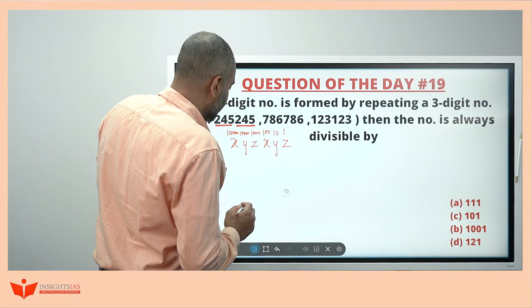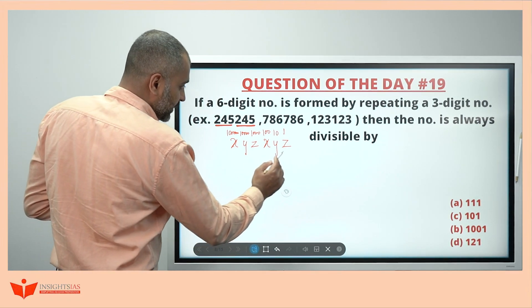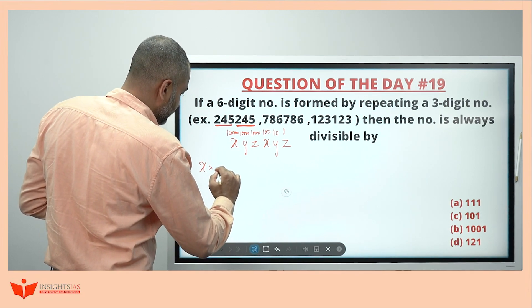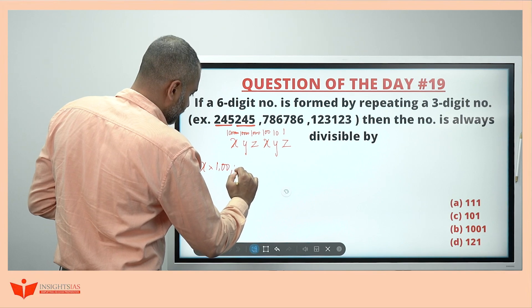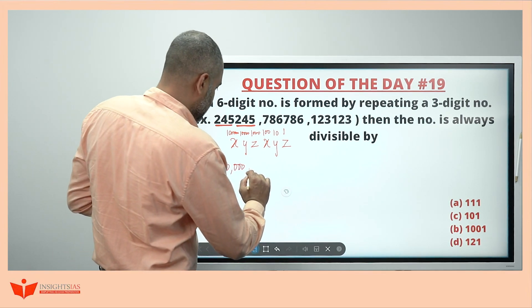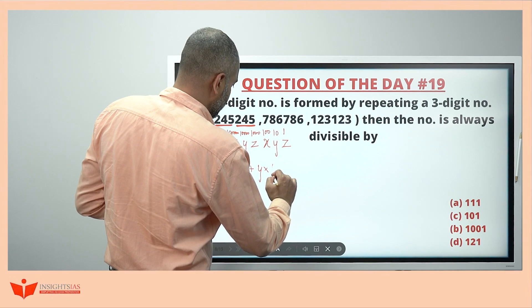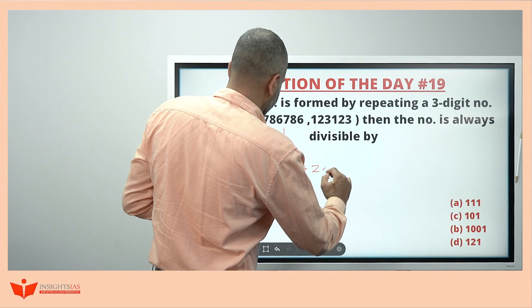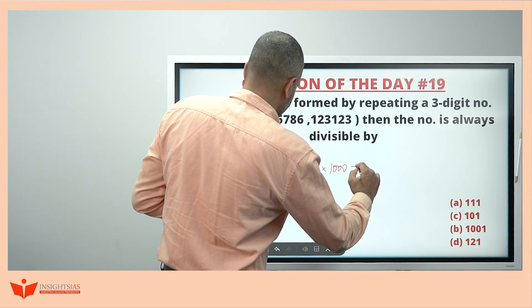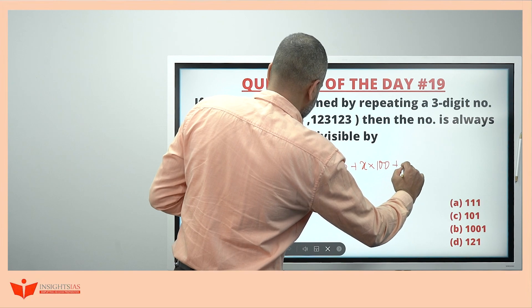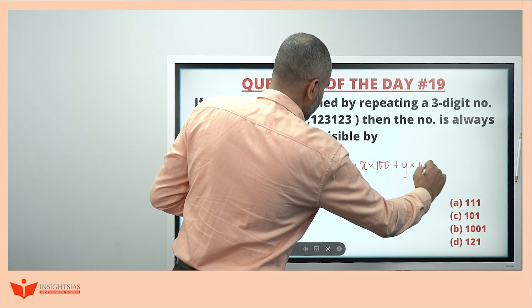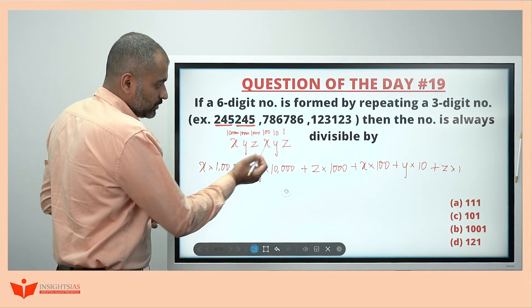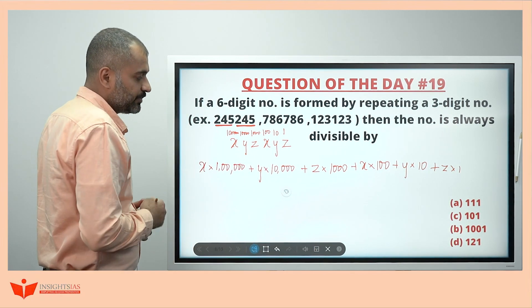Now, if I split this one, this can be written in the form of unit tens 100, 1000, 10,000, lakh. x into lakh plus y into 10,000 plus z into 1,000 plus x into 100 plus y into 10 plus z into 1. These are called the place values.